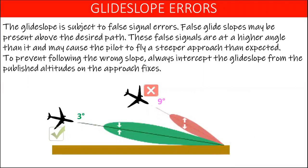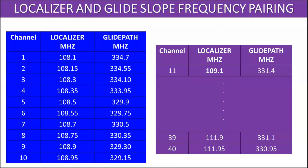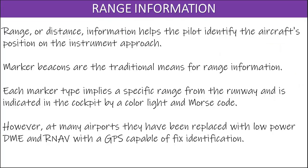The glide slope is subject to false signal errors. False glide slopes may be present above the desired path; these false signals are at a higher angle and may cause the pilot to fly a steeper approach than expected. To prevent following the wrong slope, always intercept the glide slope from the published altitudes on the approach fixes. Localizer and glide slope carrier frequencies are paired so that the navigation radio automatically tunes the glide slope frequency corresponding to the selected localizer frequency. The localizer signal is in the 108.1 MHz range while the corresponding glide slope signal is 334.7 MHz. Distance information helps the pilot identify the aircraft's position on the instrument approach, found in tabular form in the instrument approach charts.